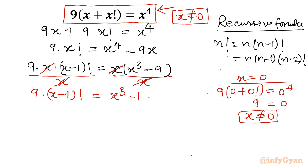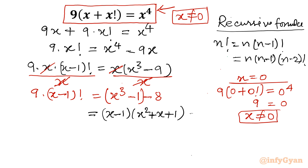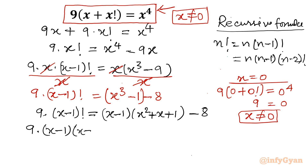Now I split minus 9 as minus 1 minus 8, and I can see the identity a³ minus b³. So I write (x minus 1) times (x² plus x plus 1) minus 8. Then applying the recursive formula again, the left side becomes 9 times (x minus 1) times (x minus 2) factorial, equal to (x minus 1) times (x² plus x plus 1) minus 8.